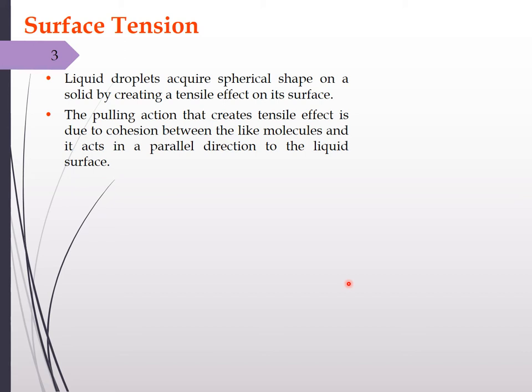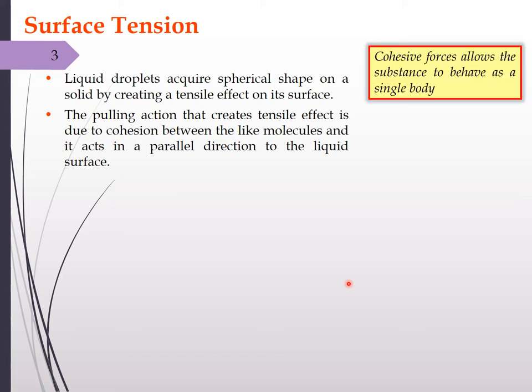Liquid droplets acquire the spherical shape because of cohesive forces, due to which a tensile effect is created on the surface. This tensile or pulling effect created due to cohesion between like molecules allows the liquid to acquire the spherical shape. If we take a beaker in which a liquid is poured, these tensile forces act in a direction parallel to the liquid surface.